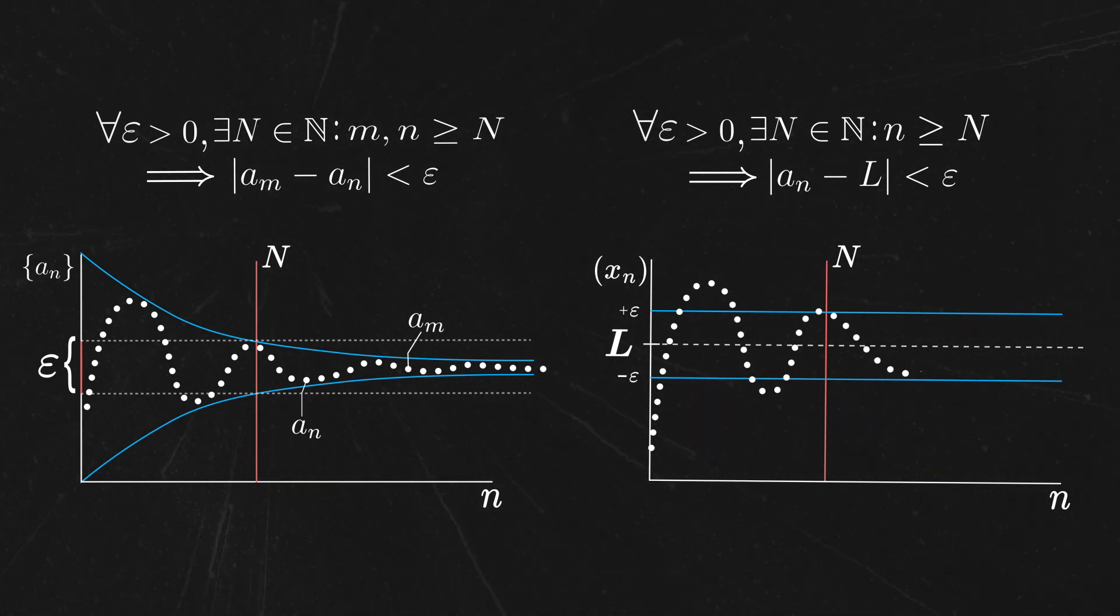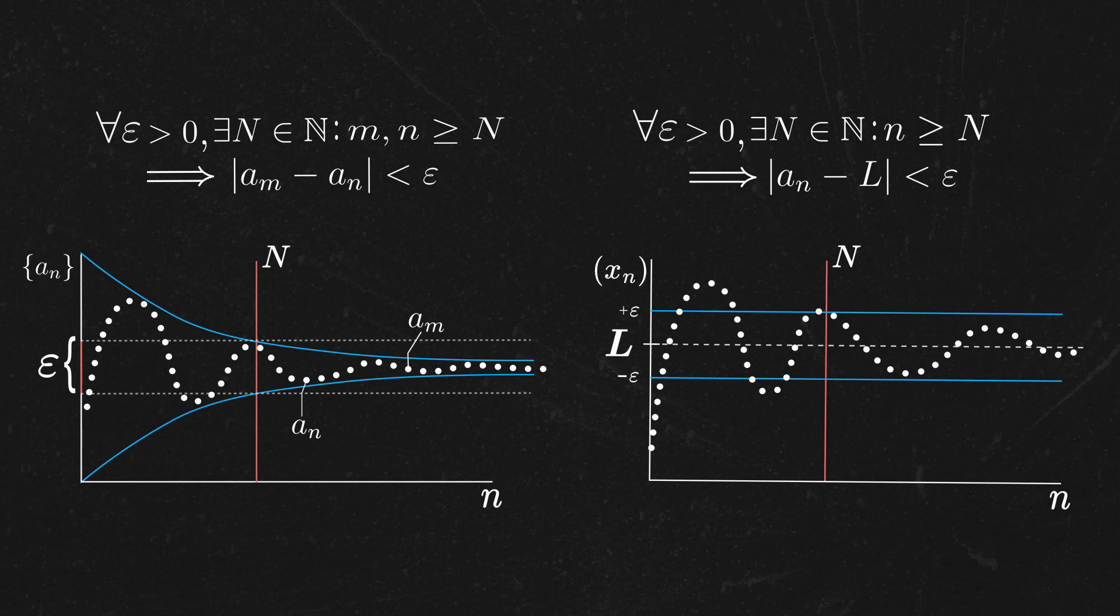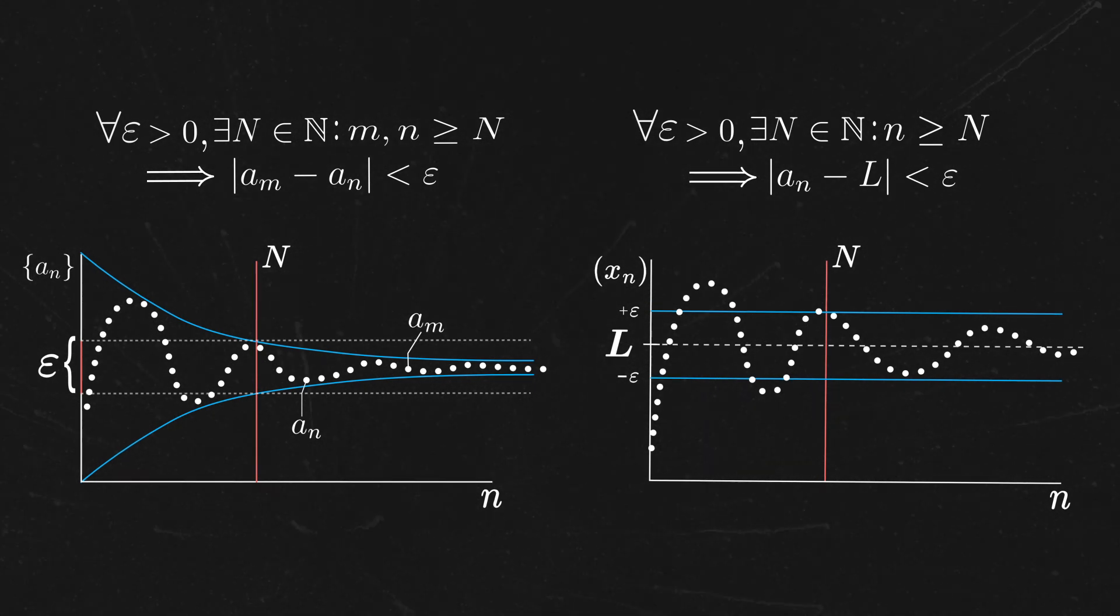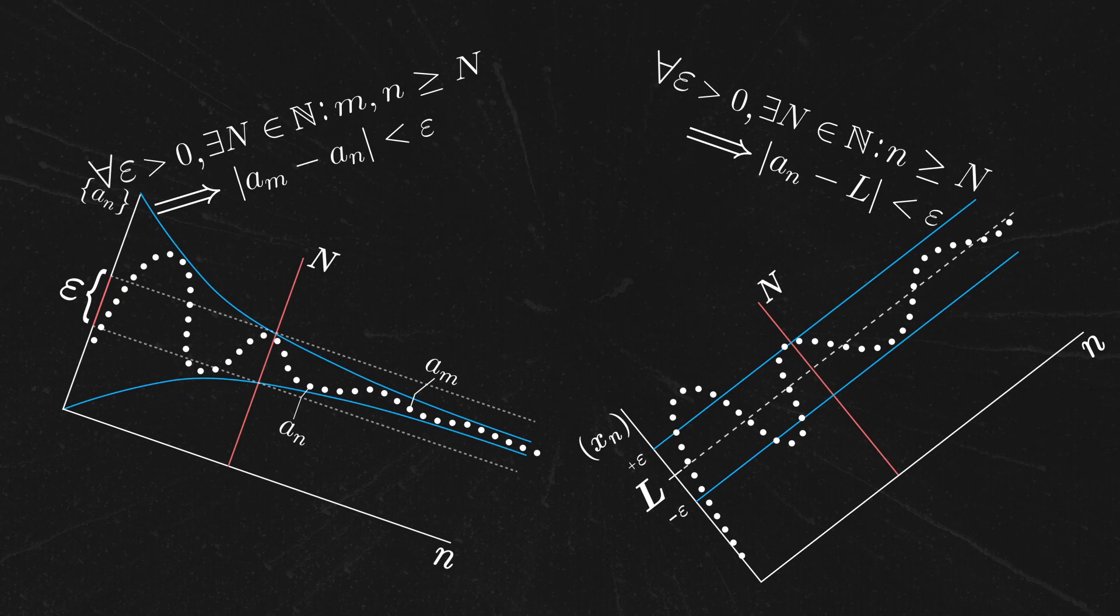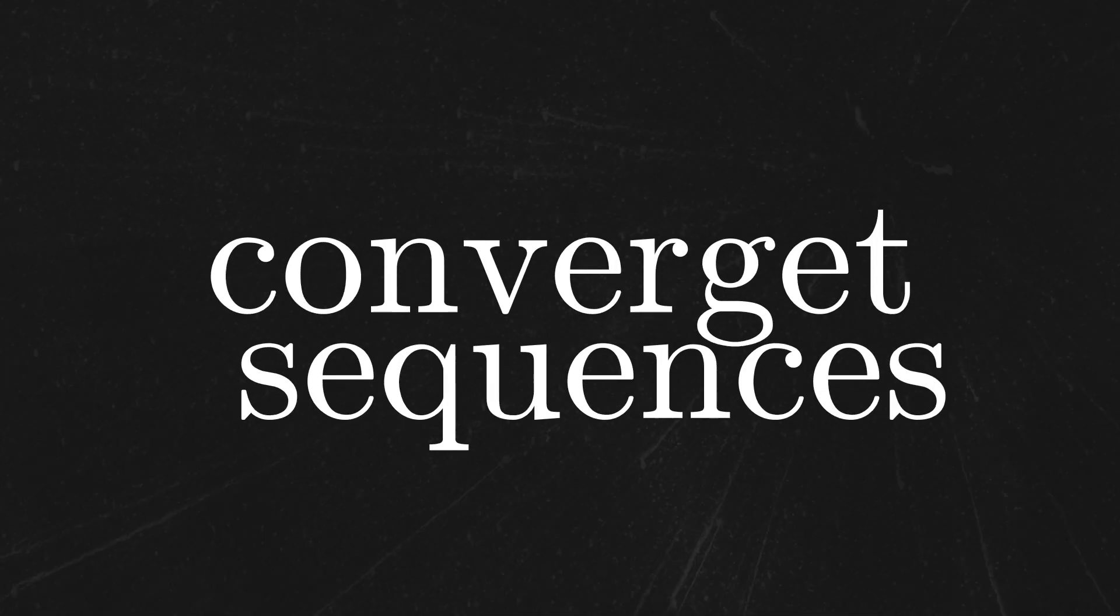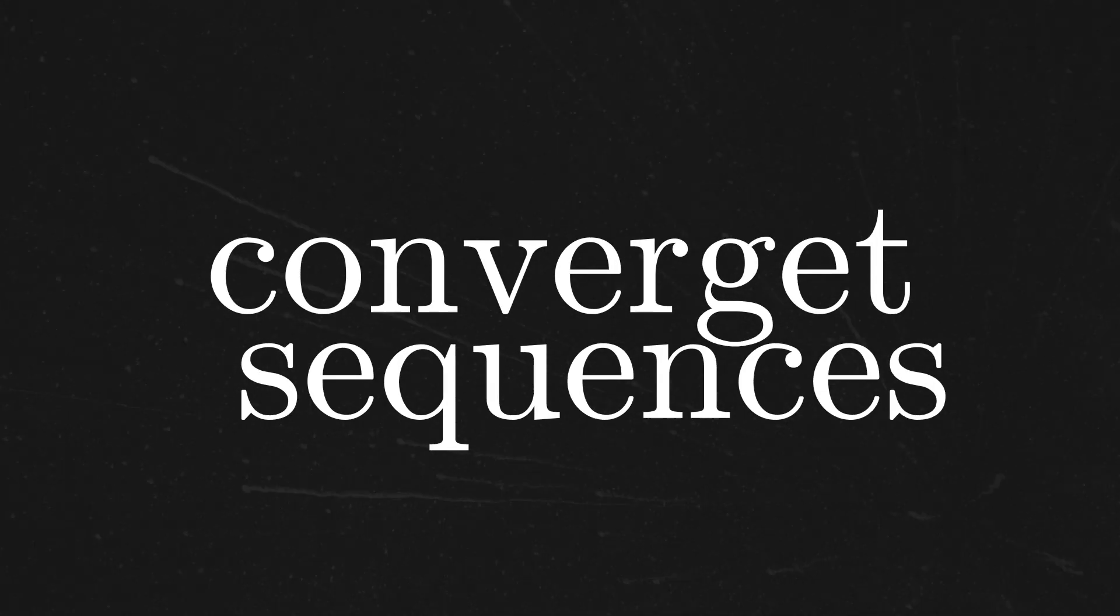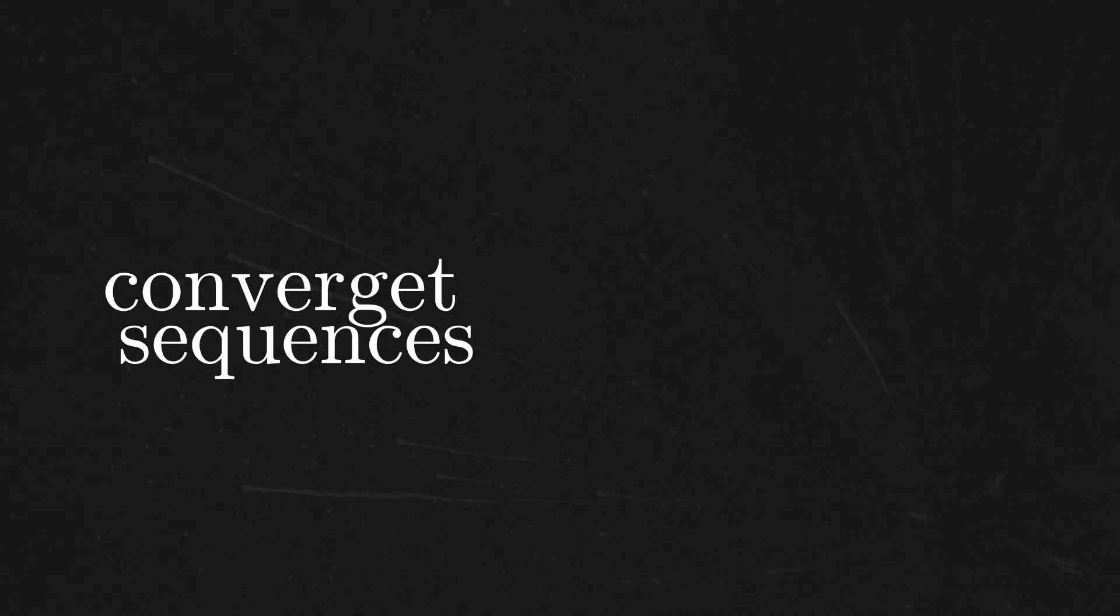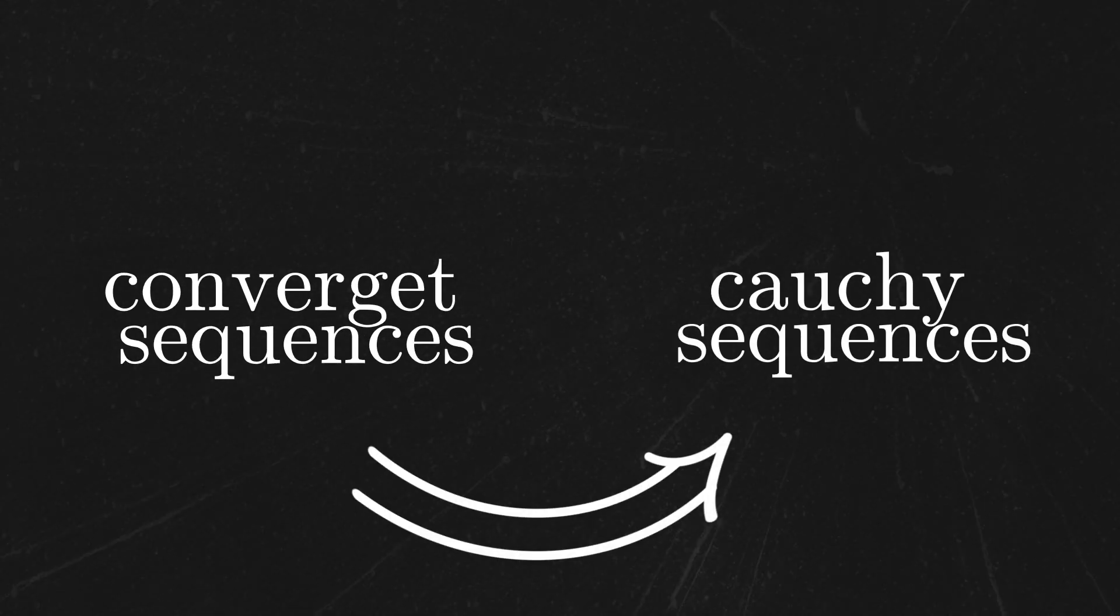If this abstract definition is really capturing our notion of real number, then Cauchy sequences should have something to do with convergent sequences. In fact, if you have a sequence of real numbers that satisfies this definition of convergence, then you can prove that that same sequence satisfies the definition of a Cauchy sequence.